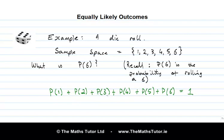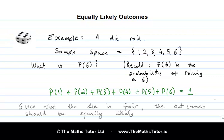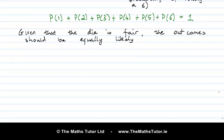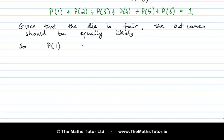However, a die roll is a special situation. If the die is fair, then we'd expect the probability of a 1 is the same as the probability of a 6, and the probability of 2 is also the same as the probability of a 6, and so on. In fact, we'd expect all of the outcomes to have the same probability — the outcomes should be equally likely.